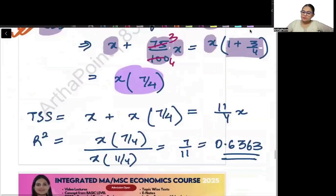So what will be TSS? TSS is ESS plus RSS. So when we do ESS plus RSS we will get 11 by 4X. This will be my TSS.